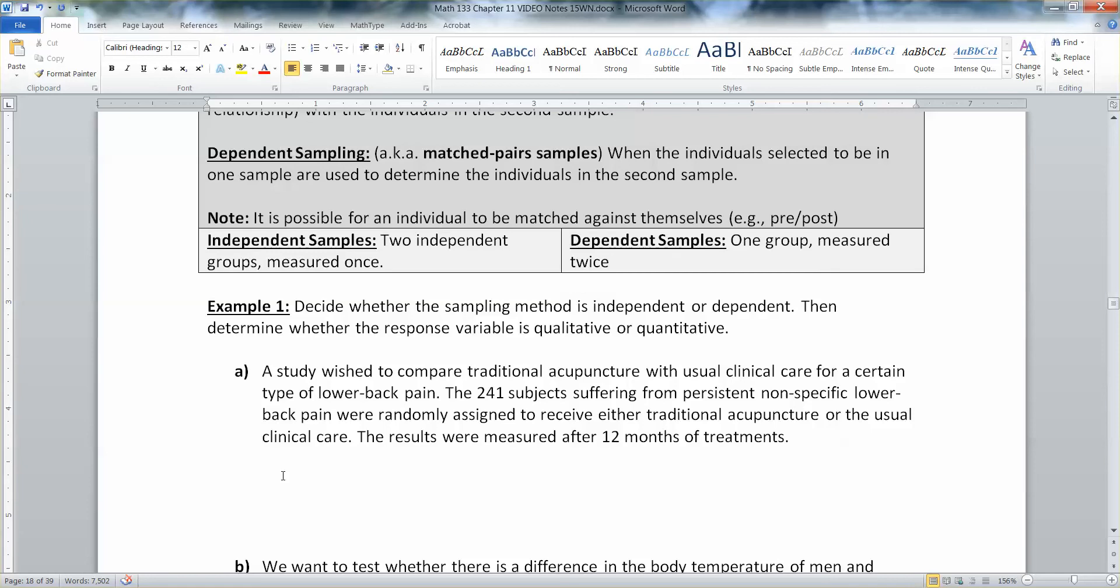Okay, well, let's see here. They have randomly assigned people put into two groups. So those people were put into either the traditional acupuncture or the usual clinical care. And then they measure them after 12 months. So this isn't one group put into acupuncture and the same group put into usual clinical care. That would be dependent. But because it's two separate groups that really only get measured at the 12-month level, that would make it independent.